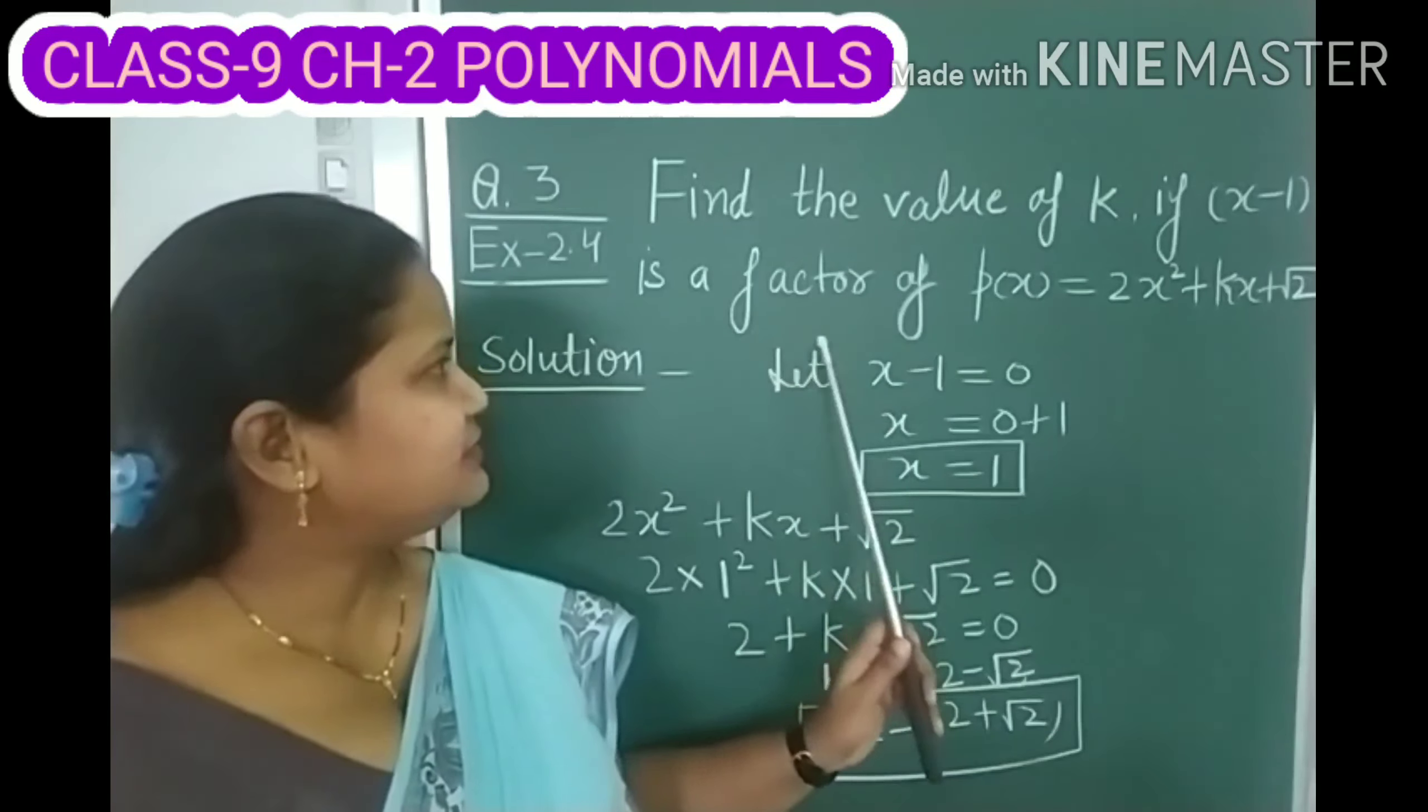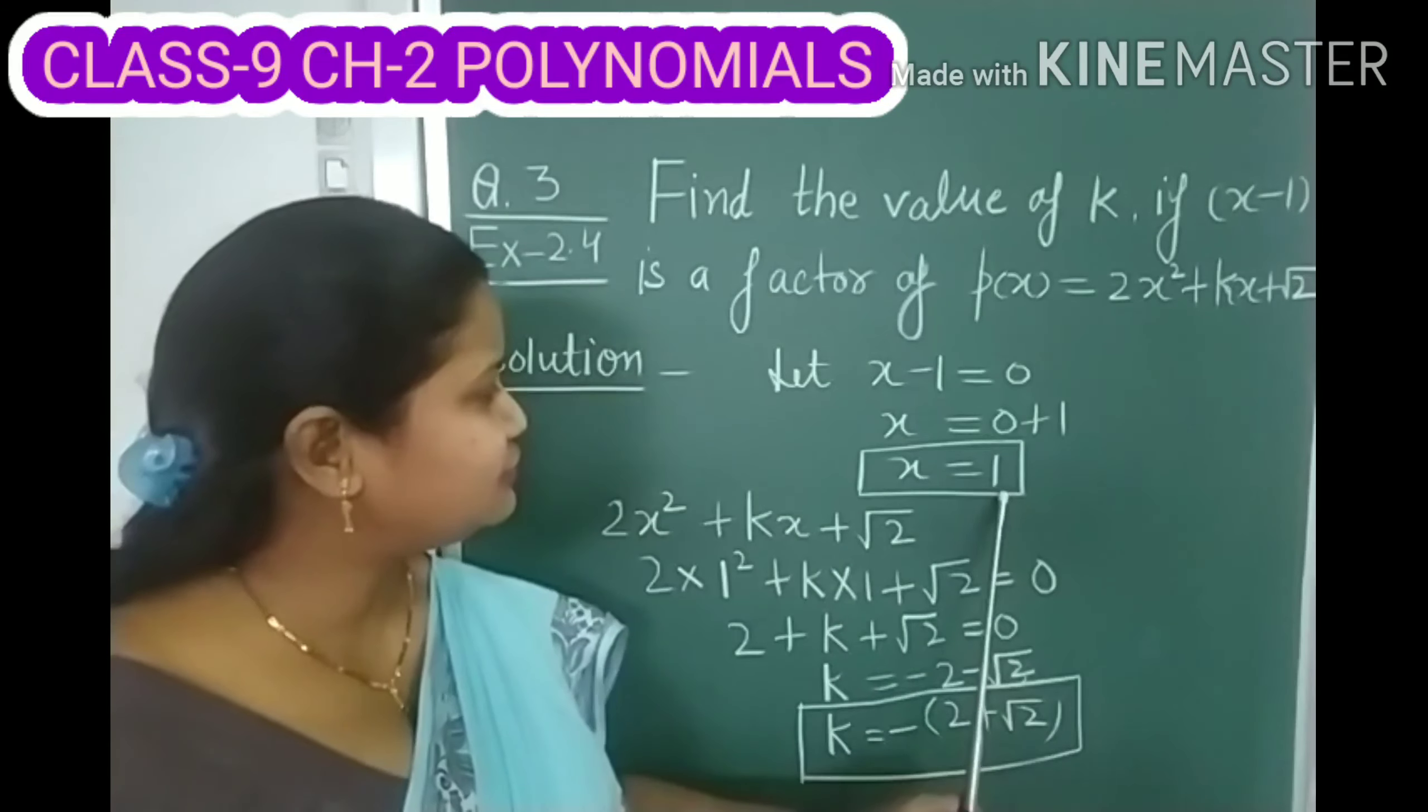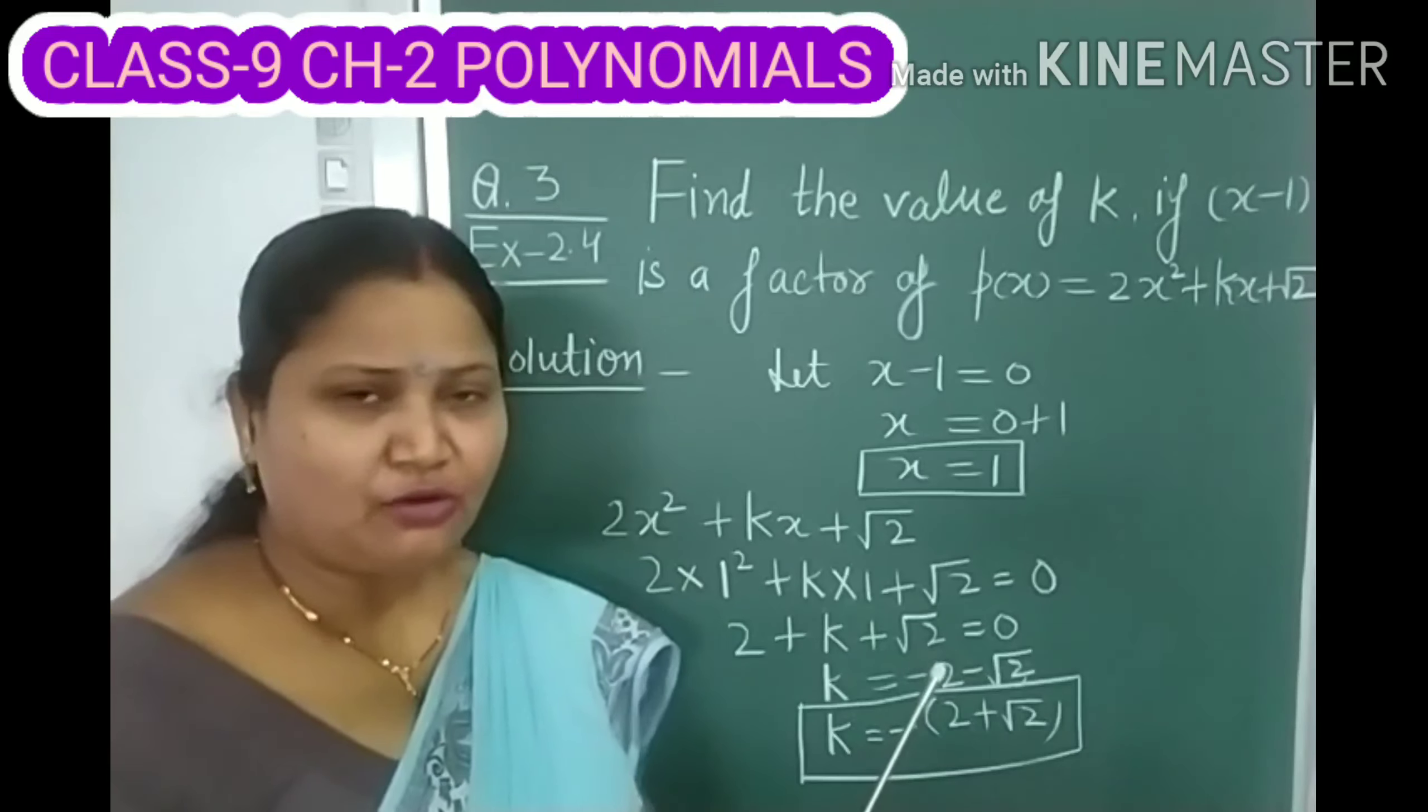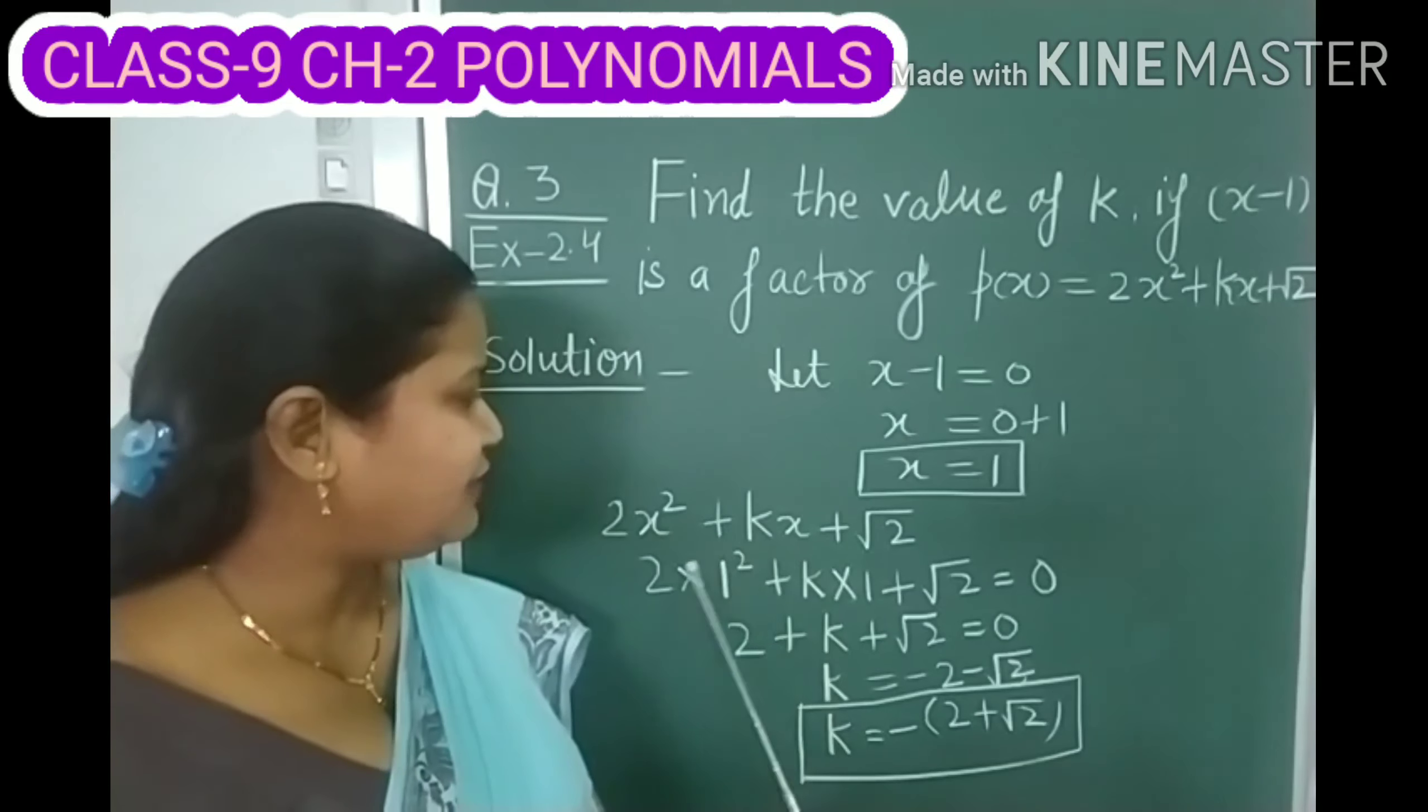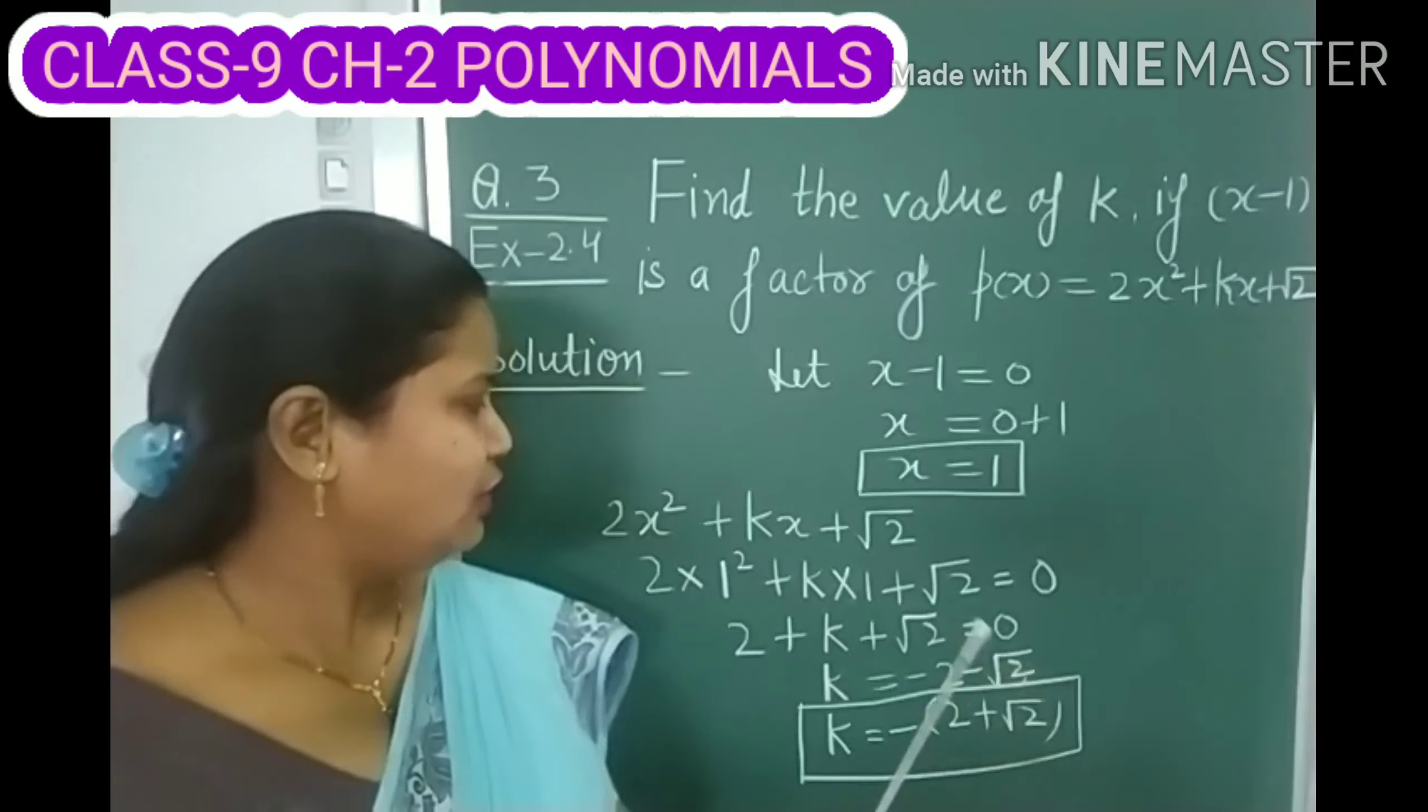Because X minus 1 is a factor of this polynomial, then X equals to 1 is a zero of this polynomial. So if we substitute 1 in place of X here, then this polynomial must become equal to 0.